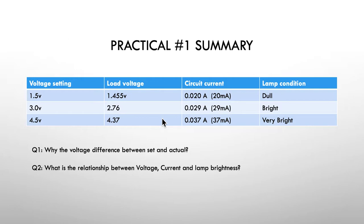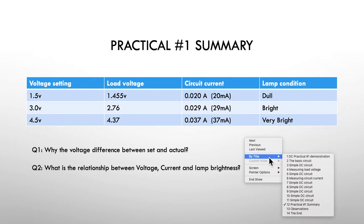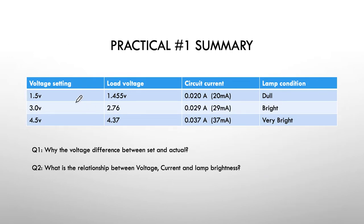So here's the summary. I've simply put up a table which gives us our voltage settings. So this is the actual batteries, the actual supply. Our batteries are here and we have our 1.5, 3, and 4.5. Those are the three voltages we operated at. We actually measured the voltages across the load at 1.45, 2.76, and 4.37. None of them exactly spot on but all very close. Then we had our currents. So we started at about 21 milliamps and our light was dull. We increased to 29 milliamps and it got quite bright. And then we increased to 37 milliamps and we got very bright.